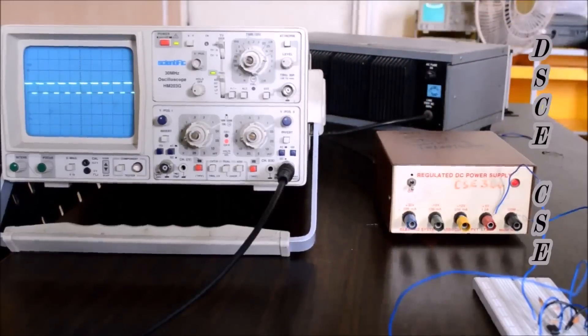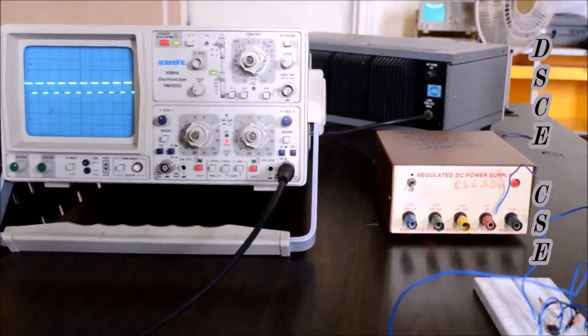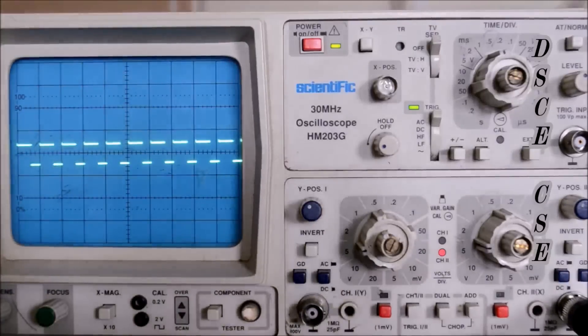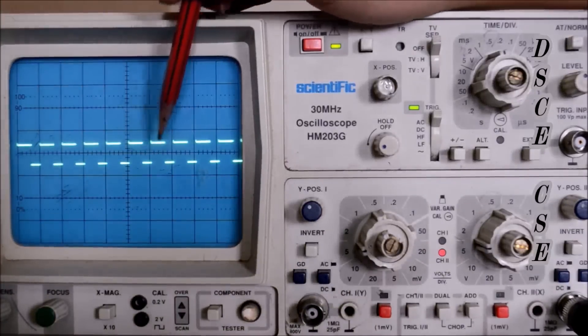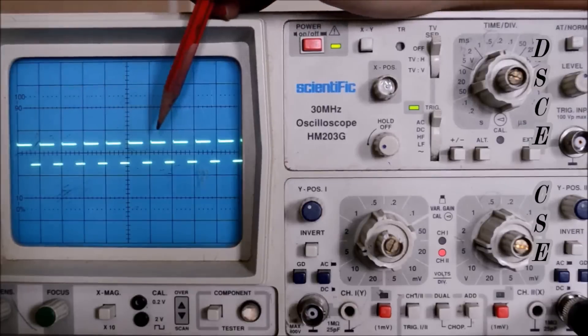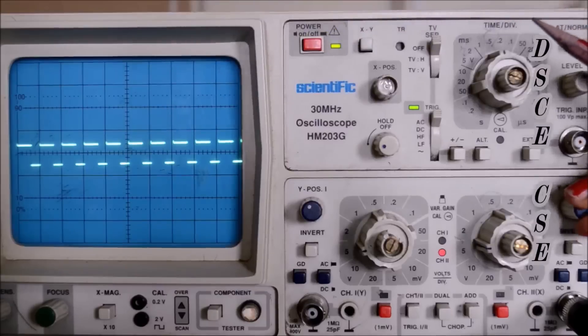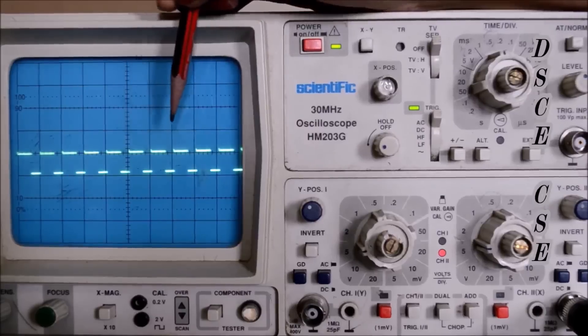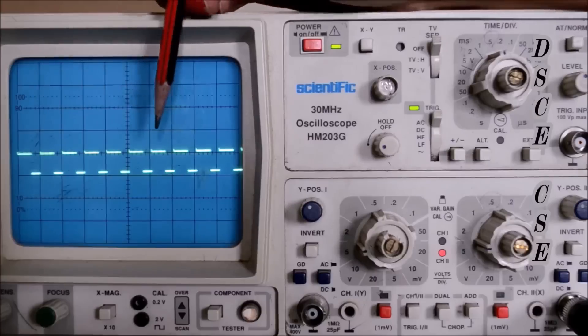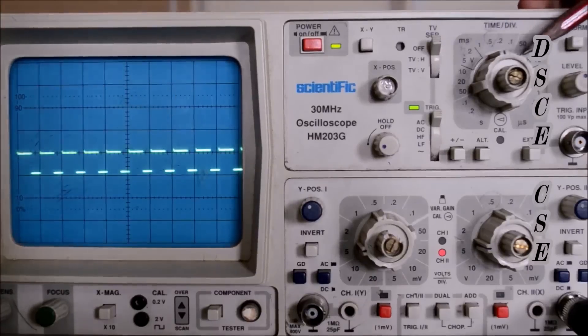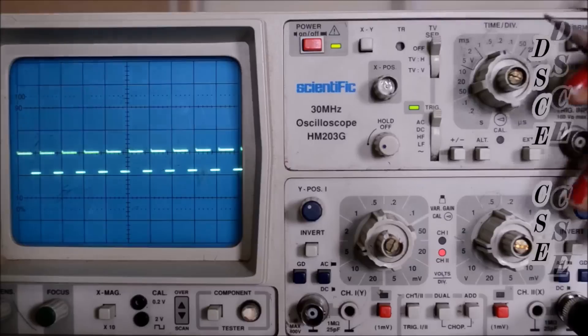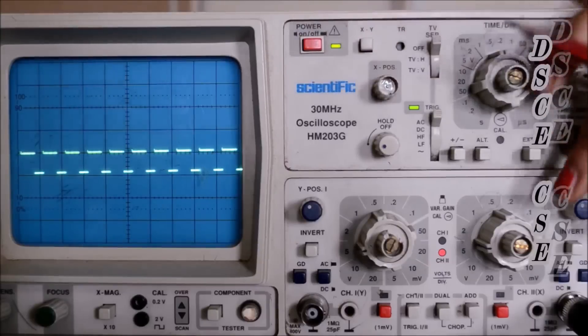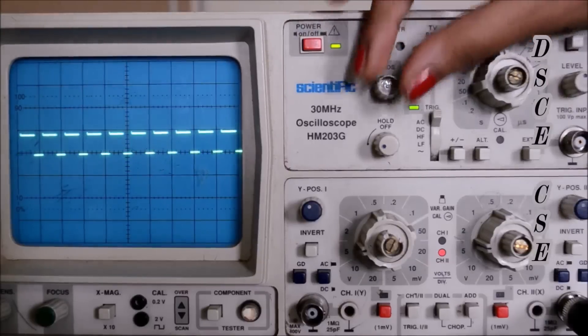We can see the square wave generated of the given frequency and duty cycle. As you can see the small divisions here, each division corresponds to 0.2 units. Let's calculate the T_on time on the axis. As you can see it is approximately covering 4 boxes. So you have to take it as 0.8 into the time per division value that is 0.5. So the T_on time will be 0.4 milliseconds.